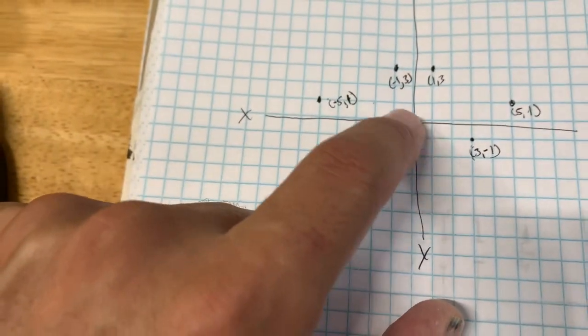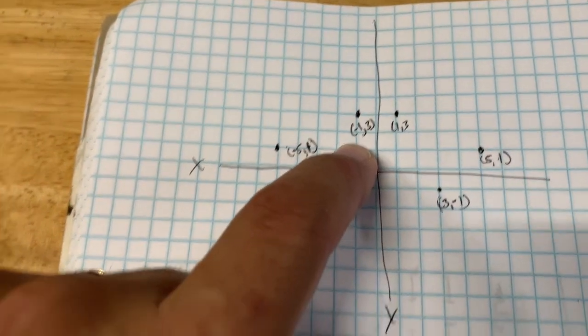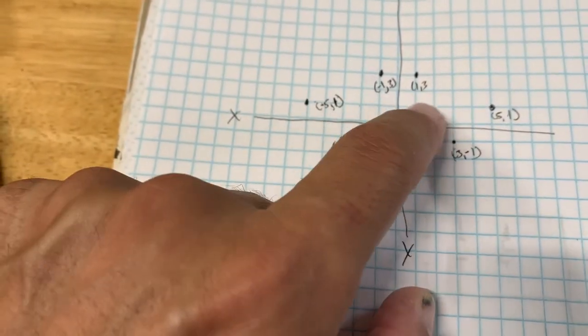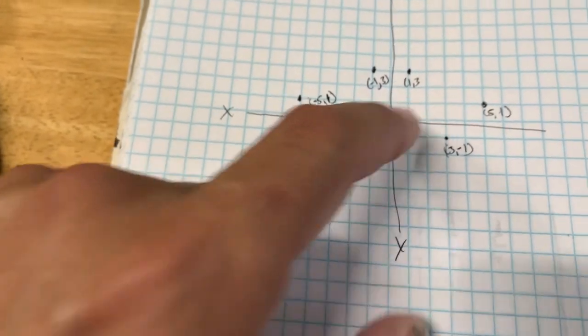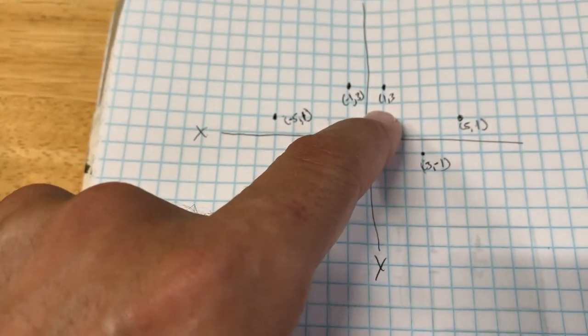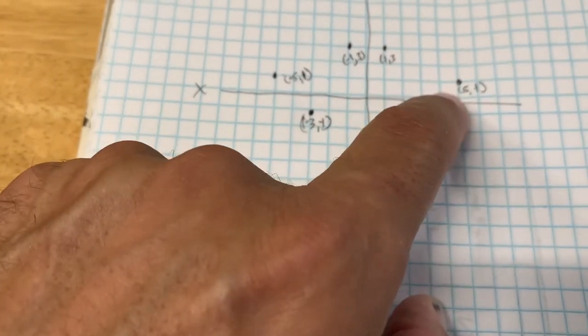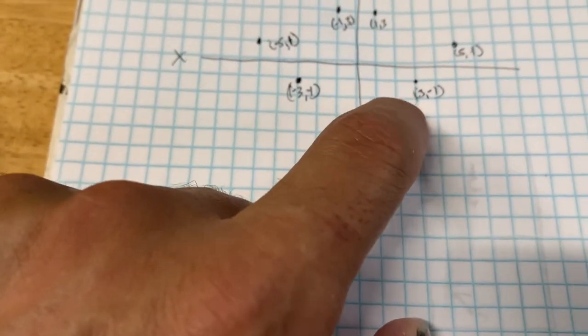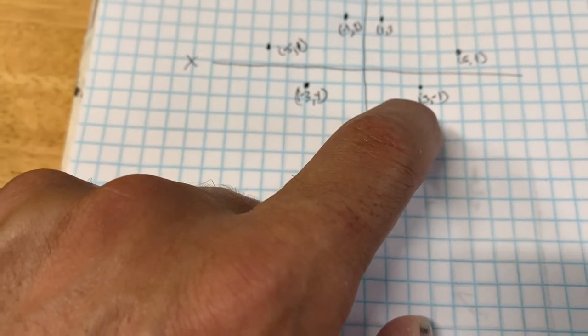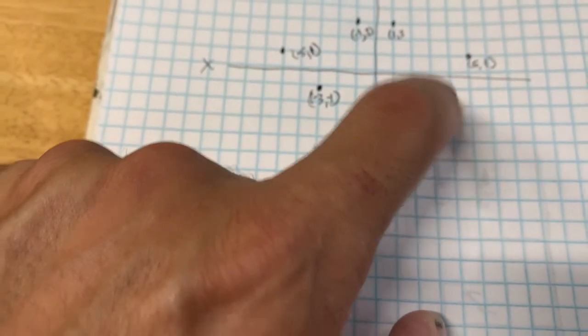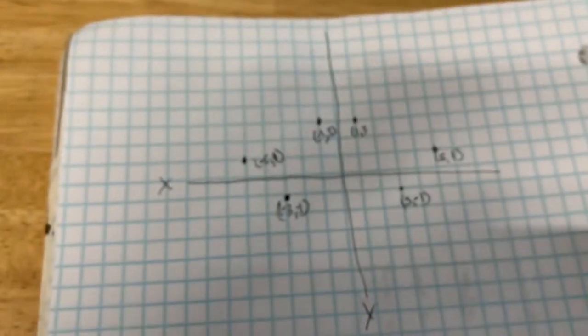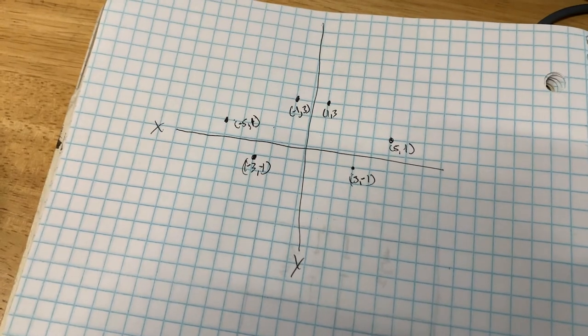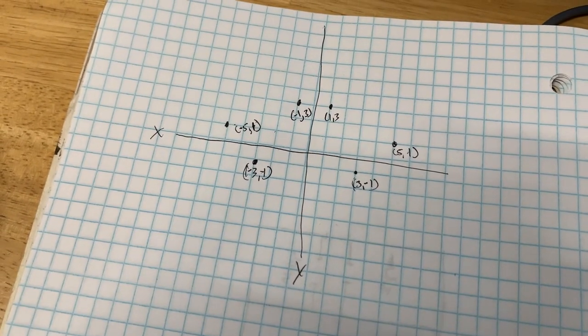So then we go up here, we have negative 1, 3. So negative 1 on the X over 1, up 3 on the Y. Here we're all positive. Oh, I forgot my parenthesis. So we have 1, 3, right? And here we're all positive, 5, up 1. Then down here we're back into the negative. Actually we're positive on the X, 3, and down negative in the 1. So there are our points that we've plotted.